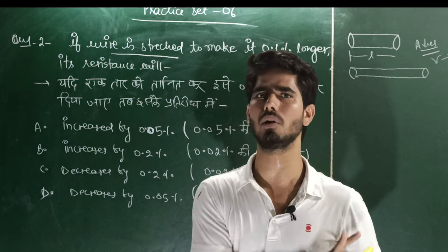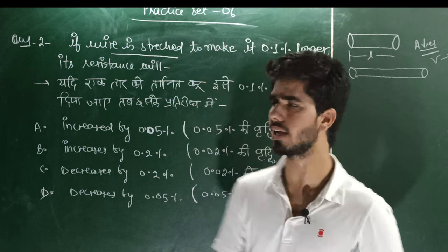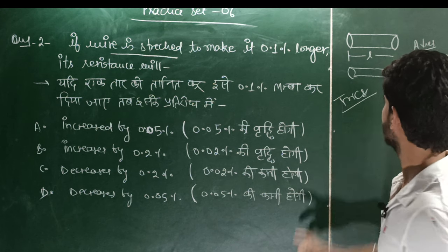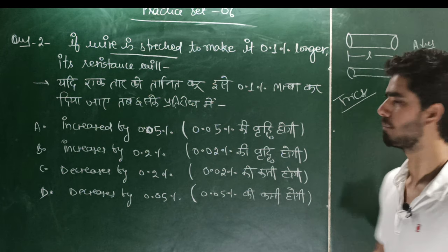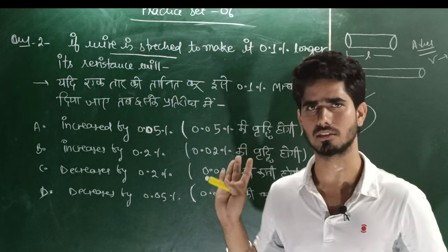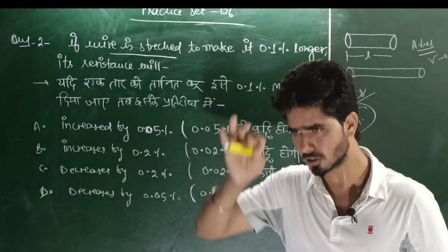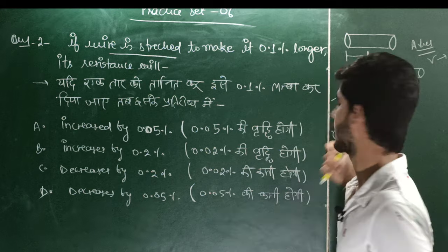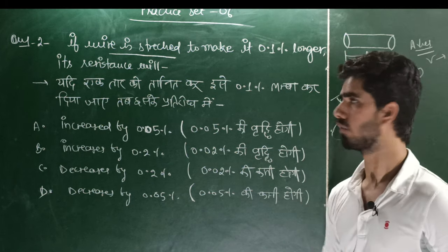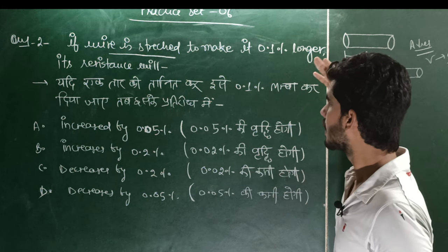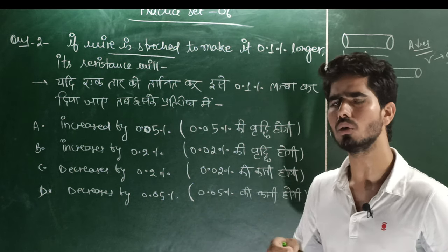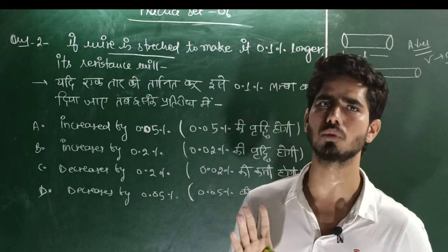I have a very important trick for this type of question. In practice, you can solve it in just 5 seconds — you can only read the question in that time. The key relation is: resistance is proportional to length squared (when volume is constant). When length increases by 0.1%, how does resistance change?